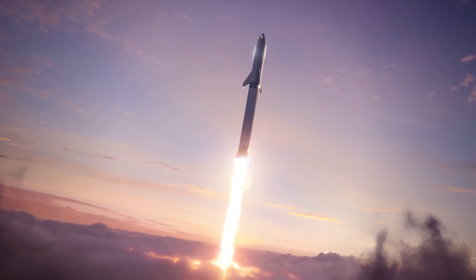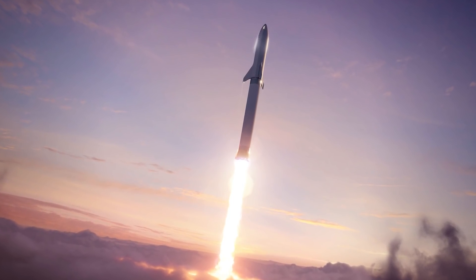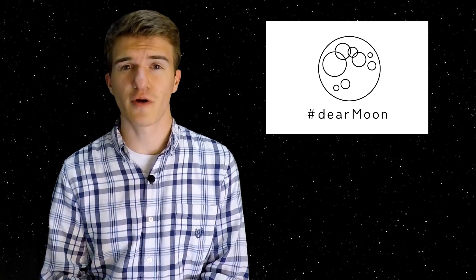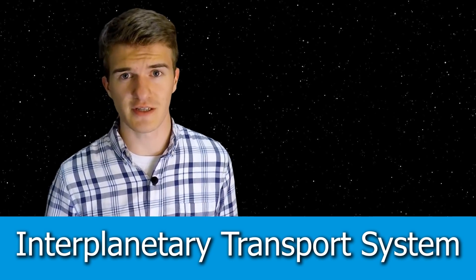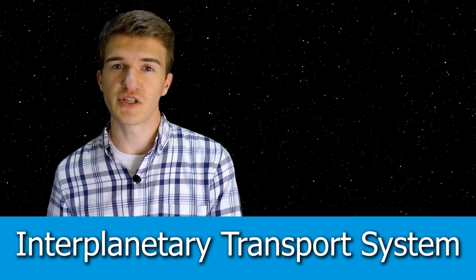Over the past few years, SpaceX and Elon Musk had been alluding to a much larger rocket, bigger than the Falcon Heavy, that they had been designing. It wasn't really until September 2018, when the Dear Moon project was announced, that they would actually be starting the development of some of these prototypes. The initial idea was called the Interplanetary Transport System, then later changed to the Big Falcon Rocket or BFR.